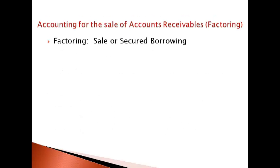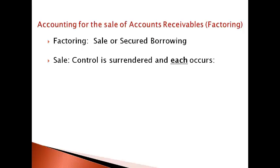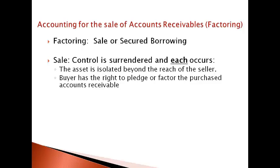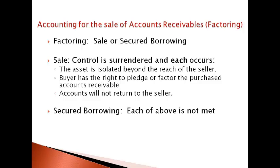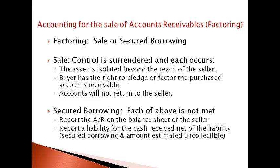Factoring accounts receivable is recorded as either a sale or a secured borrowing. Factoring is recorded as a sale and the accounts receivable is removed from the balance sheet when control is surrendered and each of the following occurs: the asset is isolated beyond the reach of the seller; the buyer has the right to pledge or factor the purchased accounts receivable; or accounts will not return to the seller. If each of the above is not met, the accounts receivable continues to be reported on the balance sheet of the seller and a liability is recorded for the cash received net of the estimated uncollectible account.